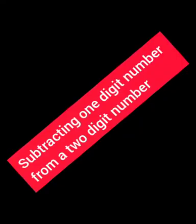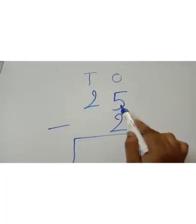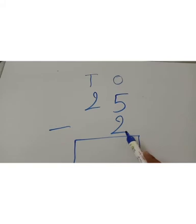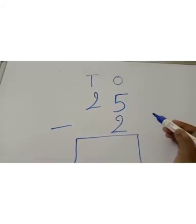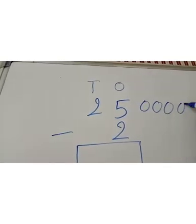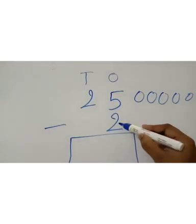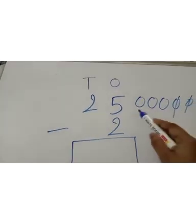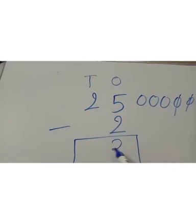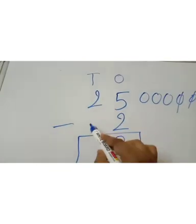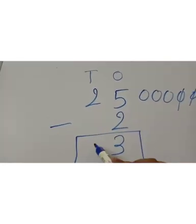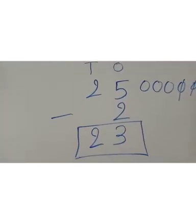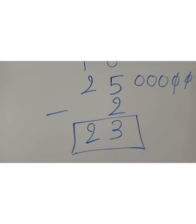Now let's learn about subtracting a one-digit number from a two-digit number. Here we have 25 minus 2. You have to start with the 1's place. 5 minus 2 — cut 2: 1 and 2 — so you have now 3. And 2 minus nothing means 2 minus 0 is equal to 2. So your answer is 23.